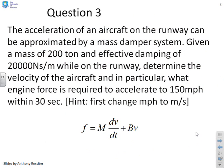Third question. Acceleration of an aircraft on a runway can be approximated by a mass damper system. Given a mass of 200 tons for the aircraft and an effective damping of 20,000 newton seconds per meter while on the runway. Determine the velocity of the aircraft and in particular what engine force is required to accelerate to 150 miles per hour within 30 seconds. So this is an interesting question which maybe doesn't have quite the same solution as some of the others. So let's go through this now.